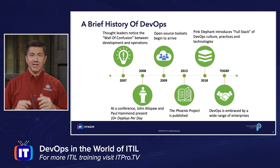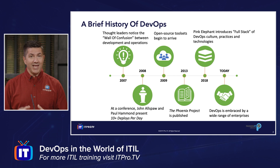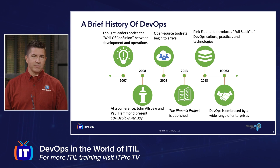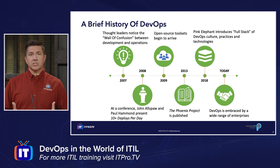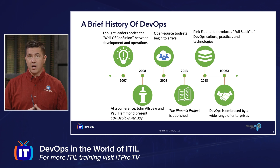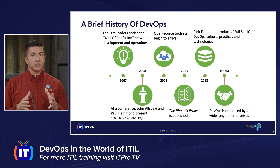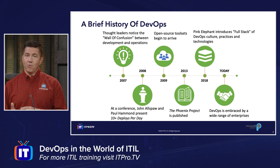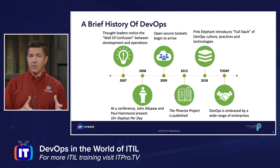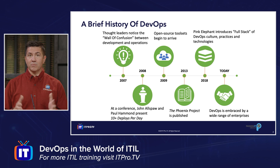First, a little history lesson. Agile, the project management methodology, is in some ways what led to the challenges around and the need for DevOps. Because as development sped up and you gained the flexibility through the implementation of Agile methodologies, operations wasn't keeping up. And with development working in a new and different way, conflicts began to emerge between developers and operations, as the gap widened between their two methodologies and different types of requirements.